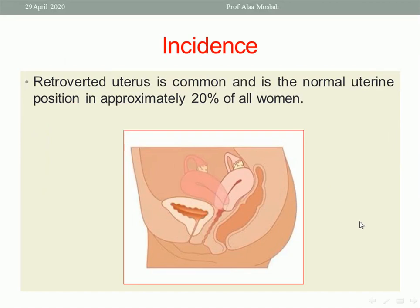What about the incidence of RVF uterus? RVF uterus is a common and normally occurring position in approximately 20% of all women. So you can say 80% of women have anteverted flexed uterus and 20% have retroverted flexed uterus. This is in normal cases — I'm not talking about secondary RVF due to pathology.